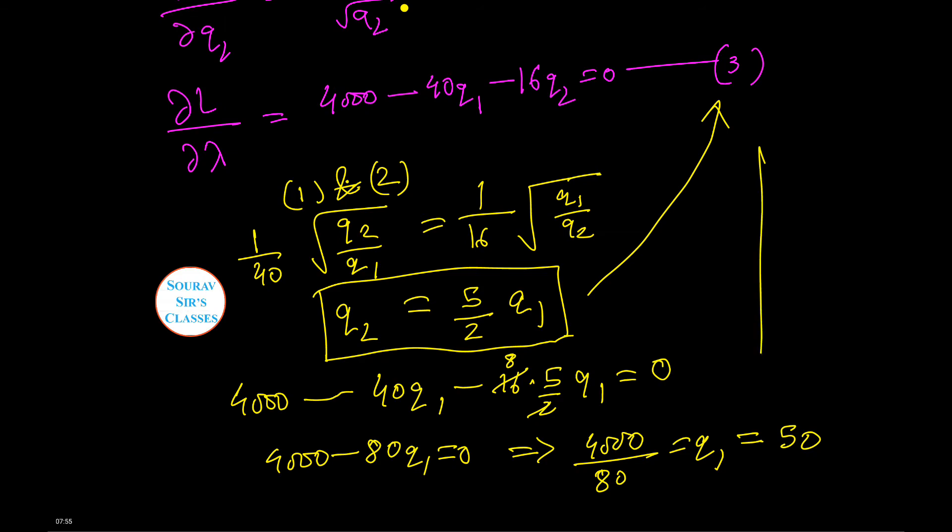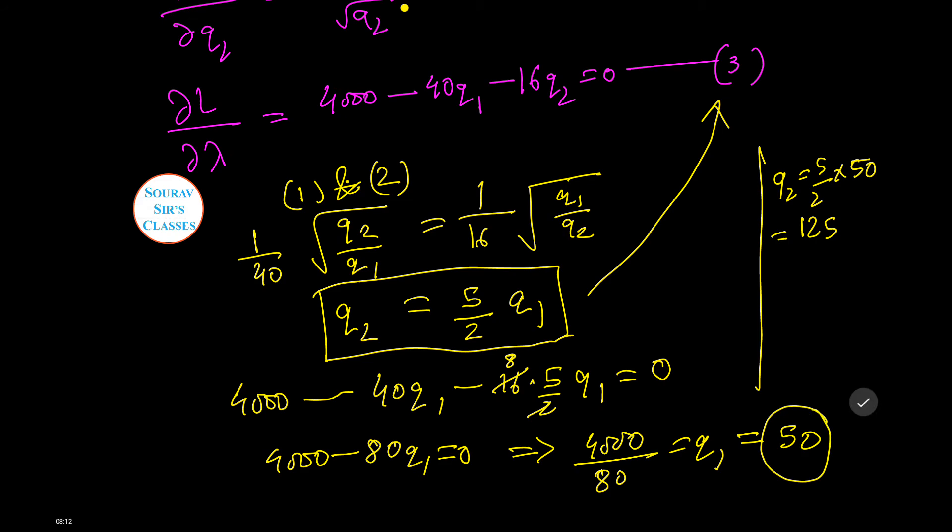Now let us calculate Q2. Q2 equals 5 by 2 times Q1 which is 50, that is 125. Therefore the optimal quantities are 50 and 125.